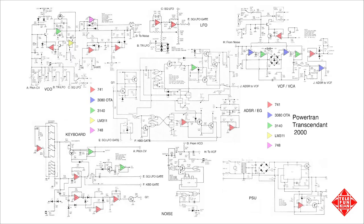The schematic of the T2000 was published in Electronics Today International in the form of individual schematics of the functional elements that combine to make the machine, such as the power supply schematic, one for the keyboard, noise generator, envelope generator, VCO, and so on. I've combined them all on one sheet in the slide on your screen, and that portion responsible for the audio path is shown on this next slide.